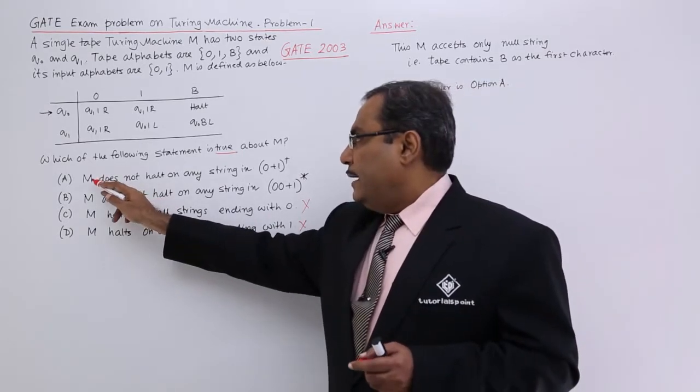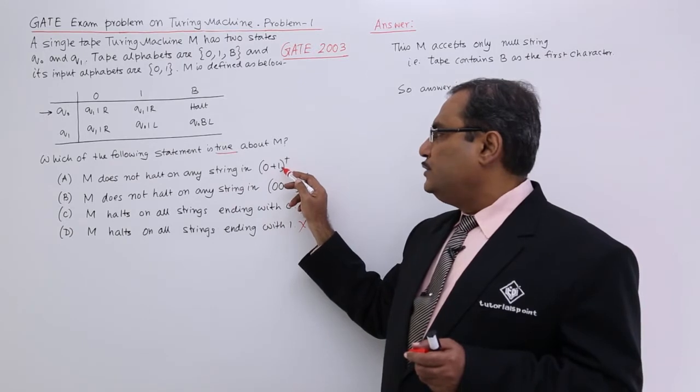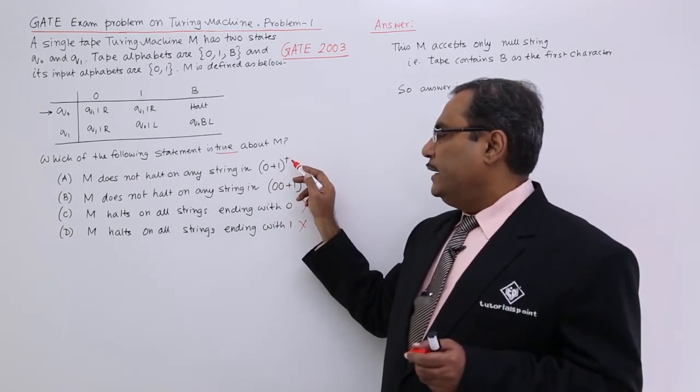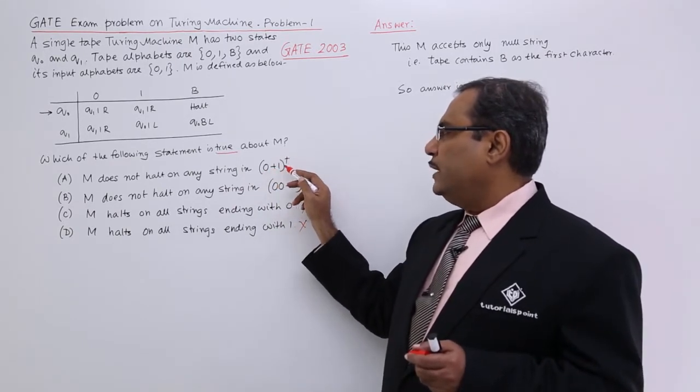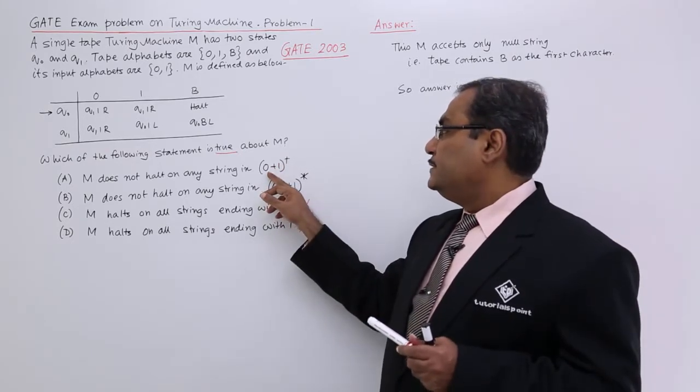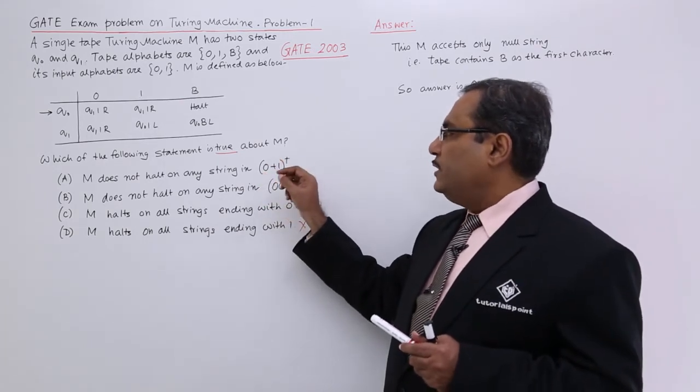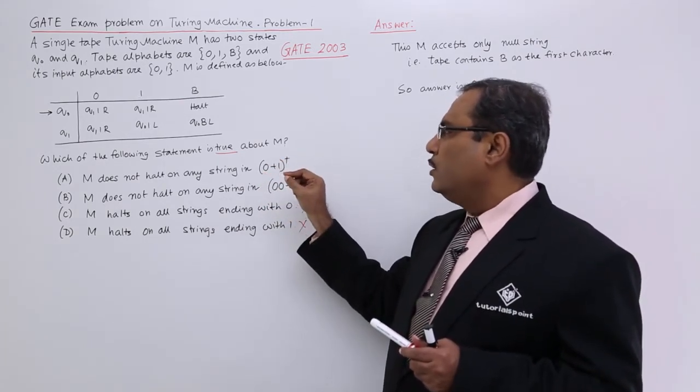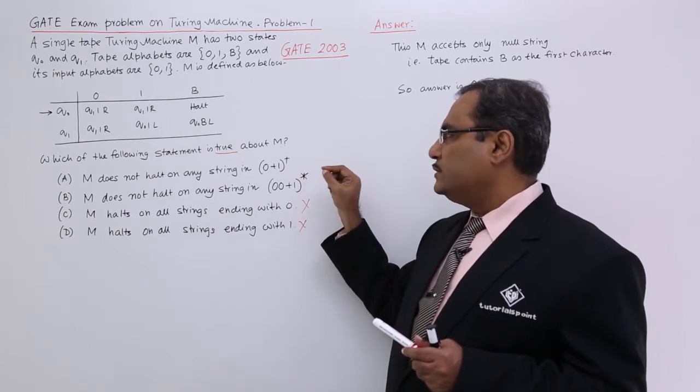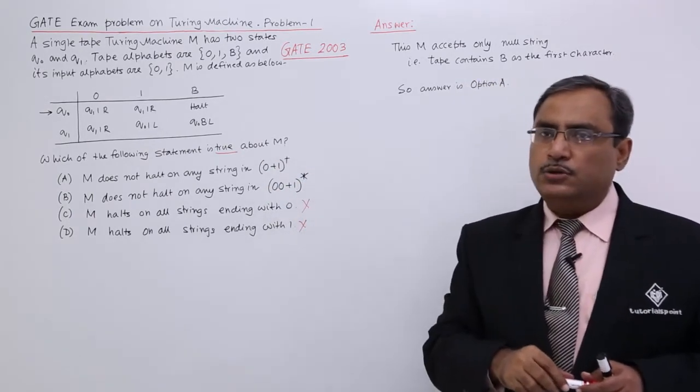M does not hold any string in 0 plus 1 whole plus. It does not hold. Here in this case we are having 0 plus 1 whole plus. That means we are having string with 0 or 00, 01, 11, 01, that means all possible combinations of 0's and 1's.